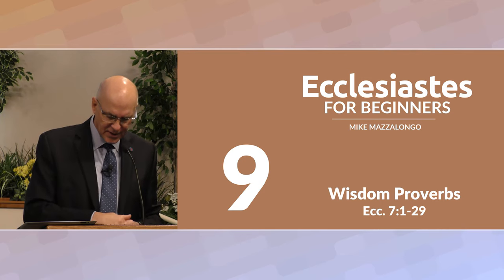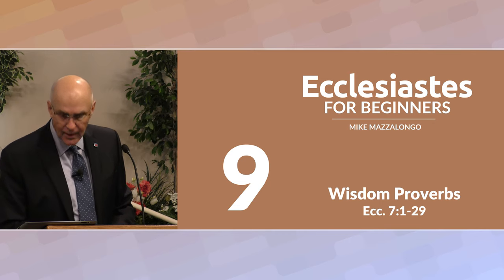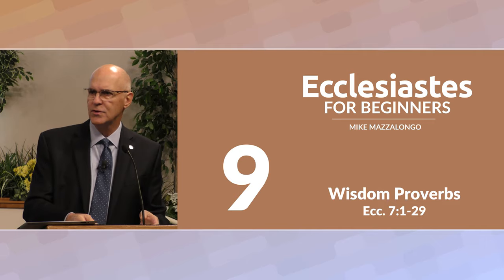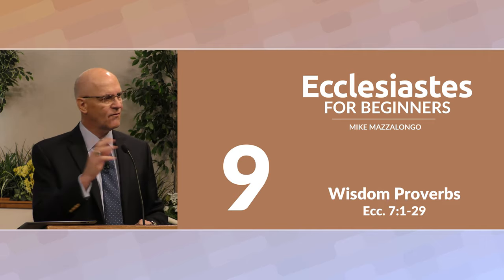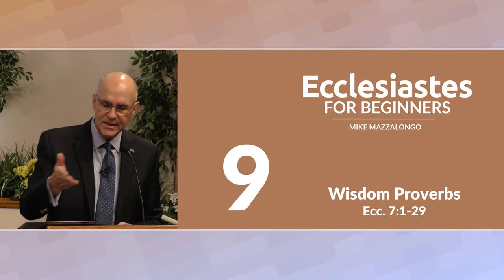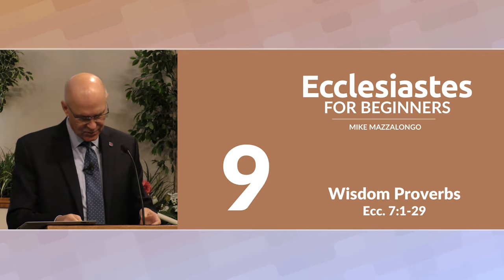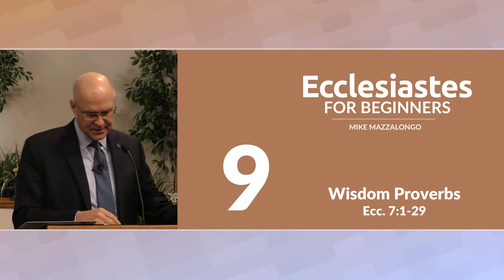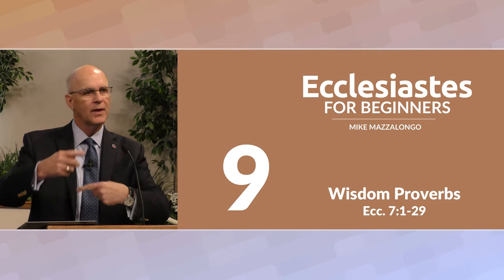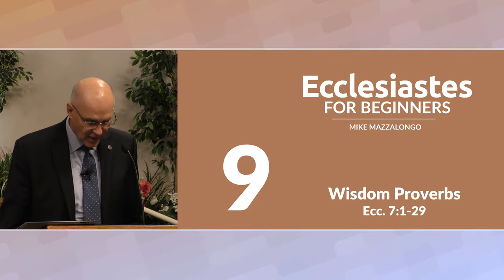He uses a literary device known as parallelism. Parallelism is a device used not only in the Bible — other authors of that era used this device too — but we see it used in the Old Testament. Parallelism is where the author contrasts or emphasizes ideas by repeating them in different ways: repeating them, contrasting them, adding to them.